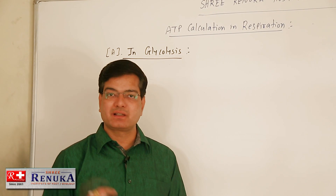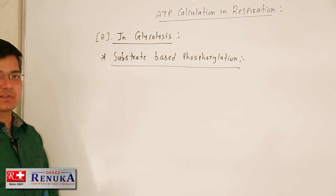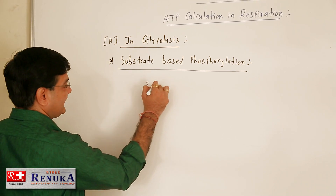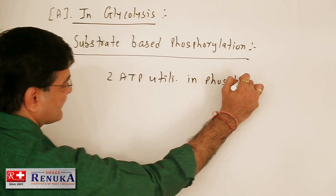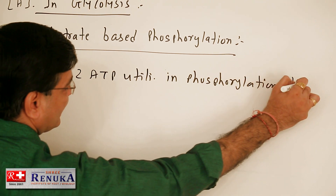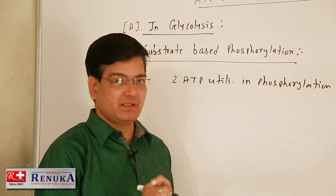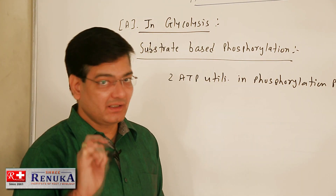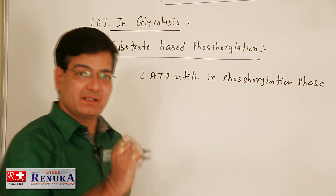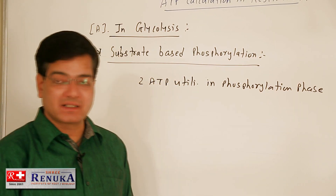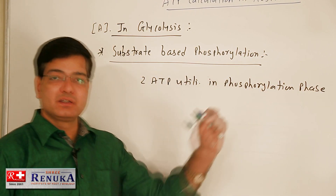In aerobic respiration, glycolysis and the Krebs cycle are carried out. In glycolysis, by substrate-based phosphorylation, 2 ATP are utilized in the phosphorylation phase. When glucose converts into glucose-6-phosphate, 1 ATP is utilized, and when fructose-6-phosphate converts into fructose-1,6-bisphosphate, another ATP molecule is utilized. So 2 ATP molecules are utilized in the phosphorylation phase of glycolysis.